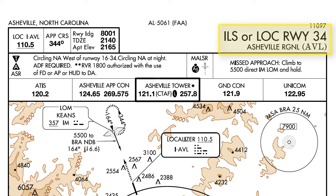First we have the name of the approach. In this case this is the ILS to runway 34 at Asheville Regional. The name of the approach actually gives us some important information. In this case it's the ILS or localizer, which means if you don't have the full ILS receiver you could just use the localizer portion of the approach. The 'or' indicates one or the other is needed.